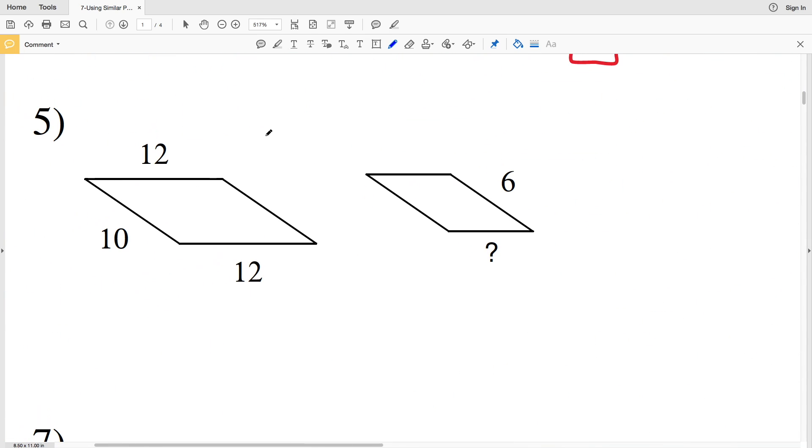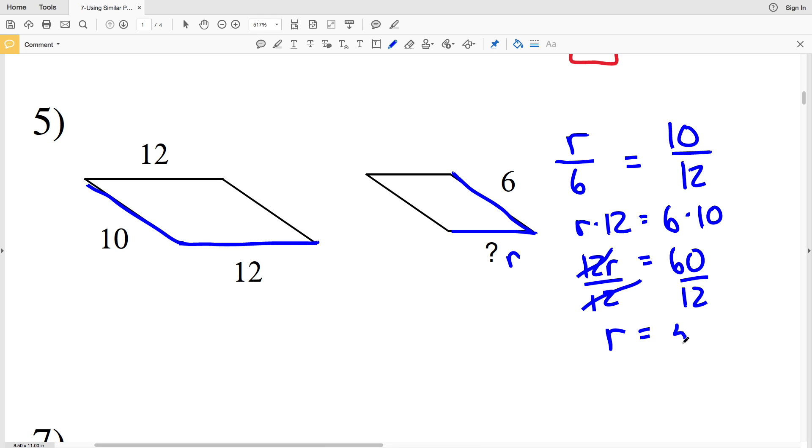In number five, notice that our indicated side—let's call this R—is shorter than 6, so R will correspond with 10. We'll have R over 6, and that side length 6 corresponds to 12, so 10 over 12. Then we'll cross multiply: R times 12 equals 6 times 10, so 12R is equal to 60. When I divide by 12, I'll get that R is equal to 60 divided by 12, which is 5, so that missing side length is 5.